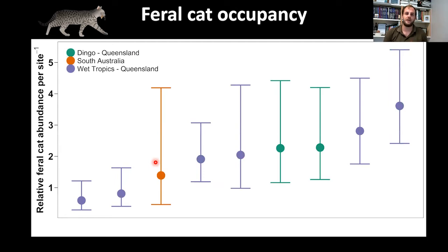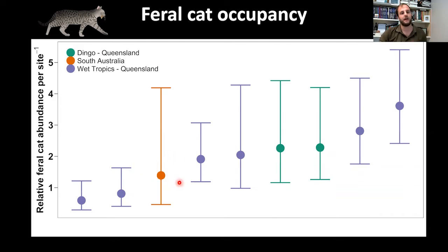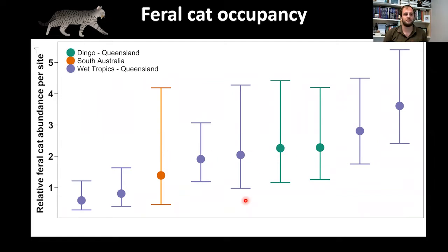I then compared feral cat relative abundance in the Wet Tropics to other Australian sites predicted to have more cats. The Wet Tropics is shown in purple alongside a site from South Australia called Dingo studied by Bronwyn Fancourt, and the Fleurieu Peninsula near Kangaroo Island studied by Pat Taggart — the only other sites with published Royle-Nichols occupancy estimates. Despite predictions of absence, relative abundance in the Wet Tropics is comparable to these other sites, suggesting ecoregion-specific studies are needed.